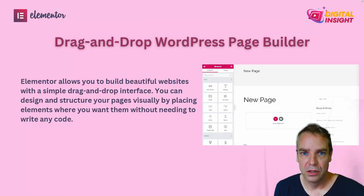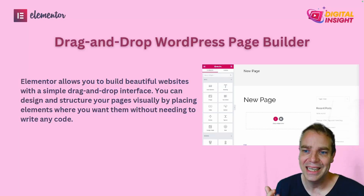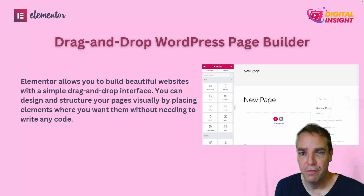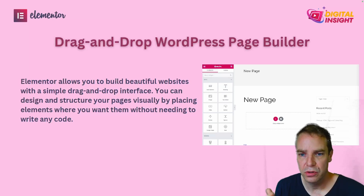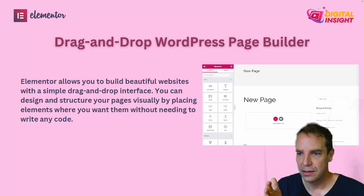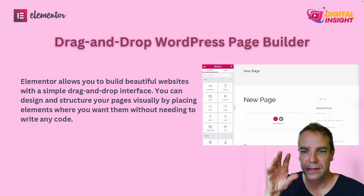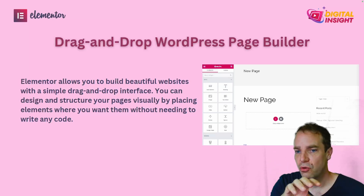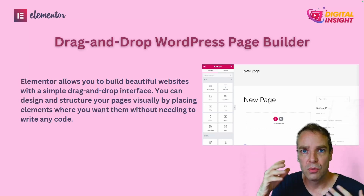Elementor is a drag-and-drop WordPress builder. The cool thing about Elementor is that it's really easy to use — you can use the drag-and-drop function and you don't have to code anything. You don't need to know how to code. Elementor makes it really easy to create good-looking websites with drag-and-drop widgets. You have widgets on the left side and you can simply drag and drop them to the position where you want them.